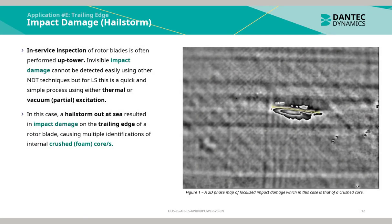Impact damage resulting from a hailstorm to the trailing edge: in-service inspection of rotor blades is often performed up-tower. Invisible impact damage cannot be detected easily using other NDT techniques, but for laser shearography this is a quick and simple process using either thermal or vacuum partial excitation. In this case, a hailstorm out at sea resulted in impact damage on the trailing edge of a rotor blade, causing multiple identifications of internal crushed foam cores.